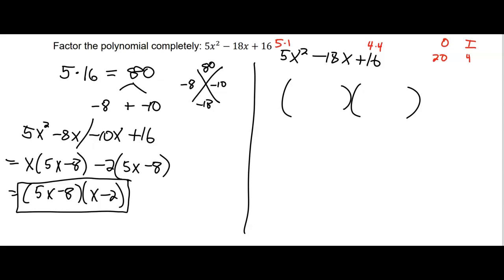Instead of 4 and 4, let's try 8 and 2. The outer product is 10, the inner product is 8, and this will make an 18 if I add them together. So these are worth trying out.